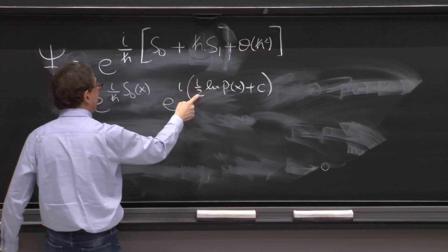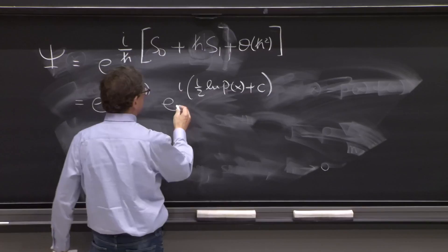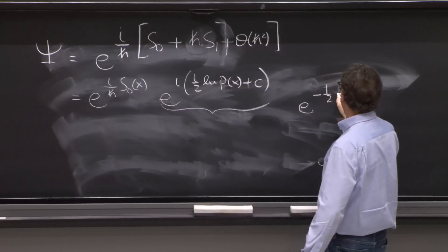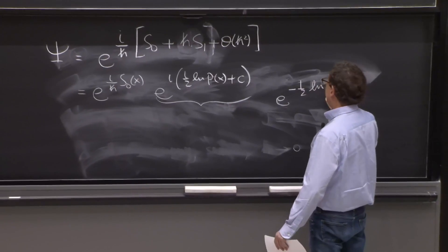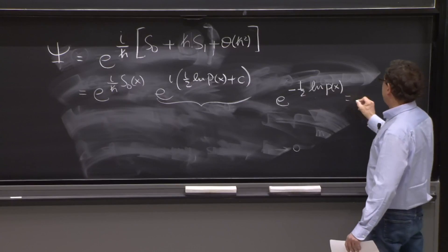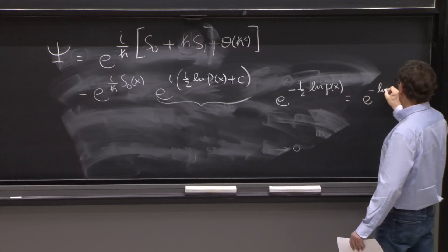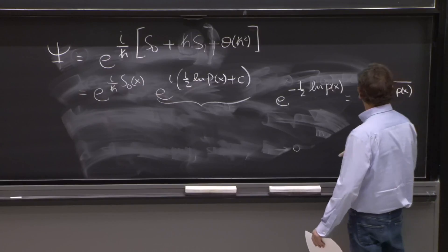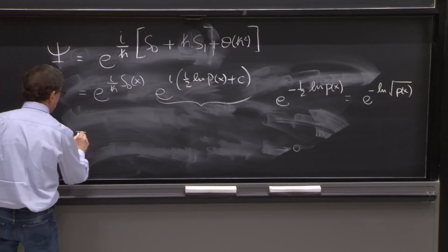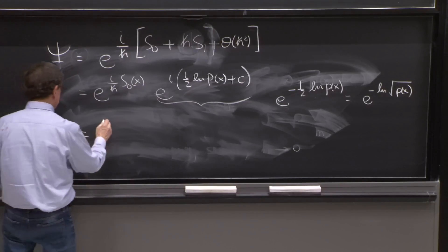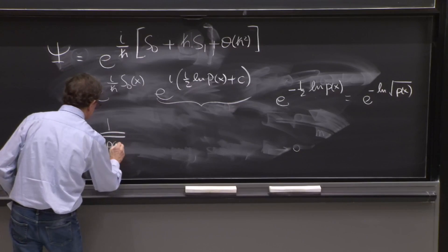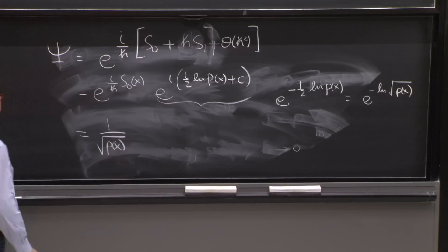So you have 1 half. So this becomes e to the minus 1 half logarithm of p of x. And 1 half the logarithm of p of x is e to the minus log of square root of p of x. And when you go like that, e to the minus that is 1 over the function. So 1 over square root of p of x like that.